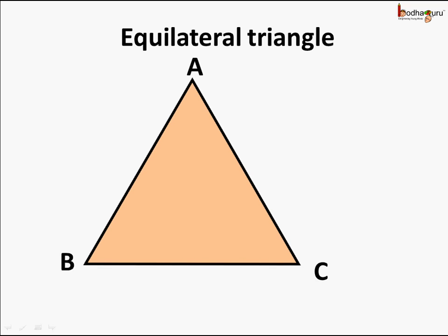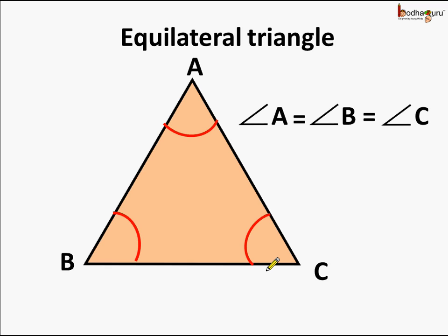Now, coming to an equilateral triangle — we know in an equilateral triangle all the angles are equal. So we say angle A is equal to angle B, which is equal to angle C. Not just this, even the sides are equal, meaning line segment AB, BC, and CA are of equal lengths.